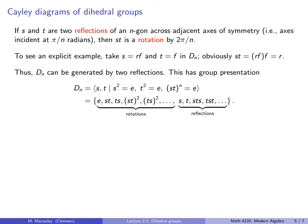Thus, D_N can be generated by two reflections S and T. This does generate D_N because when you multiply them together you get R, and using this R you can generate D_N with S or T. This has the following group presentation: D_N is generated by S and T, where S² is the identity, T² is the identity — both just saying they are their own inverse — and (ST)^N is the identity. Elements in D_N can be written using words in S and T that alternate, because anytime you have S², you can just remove it.